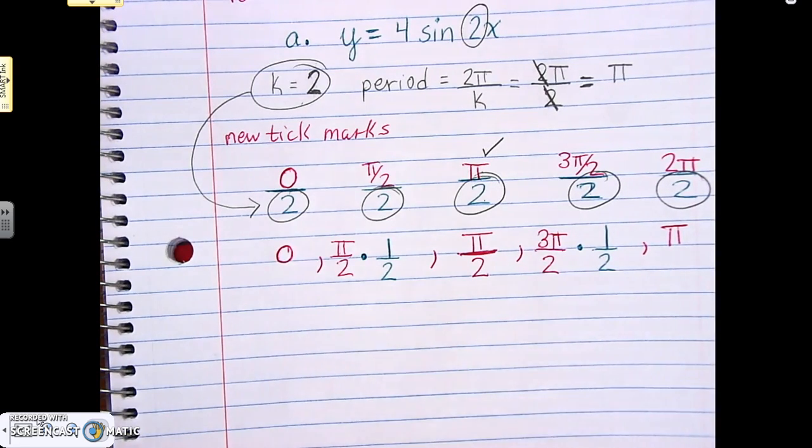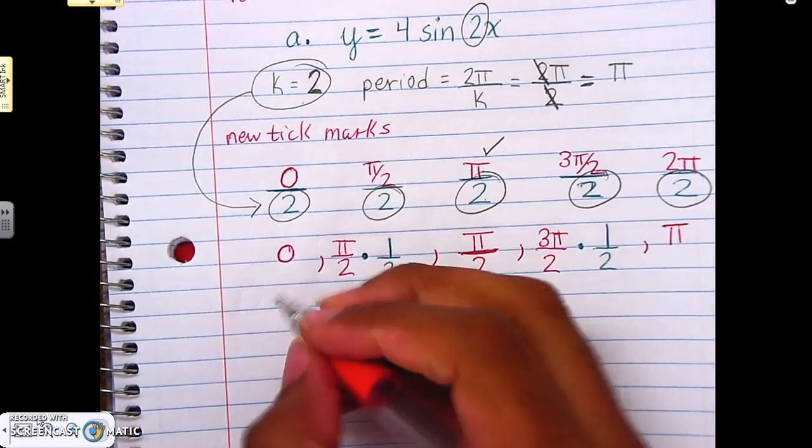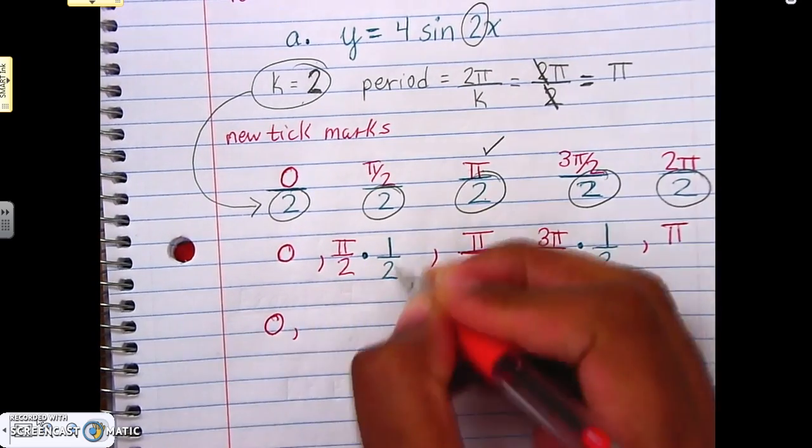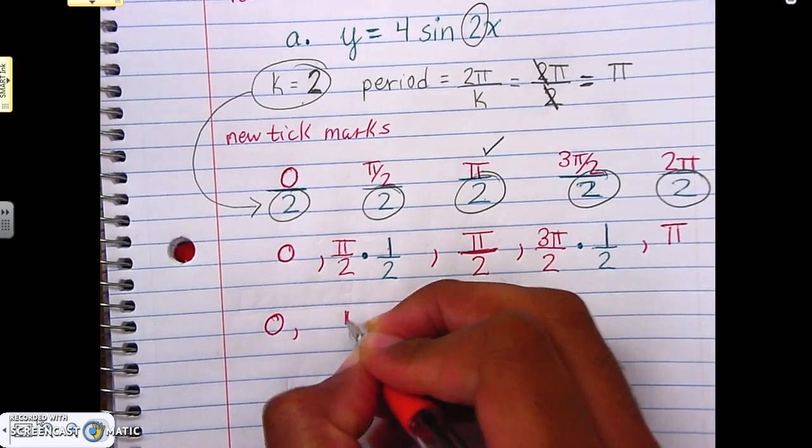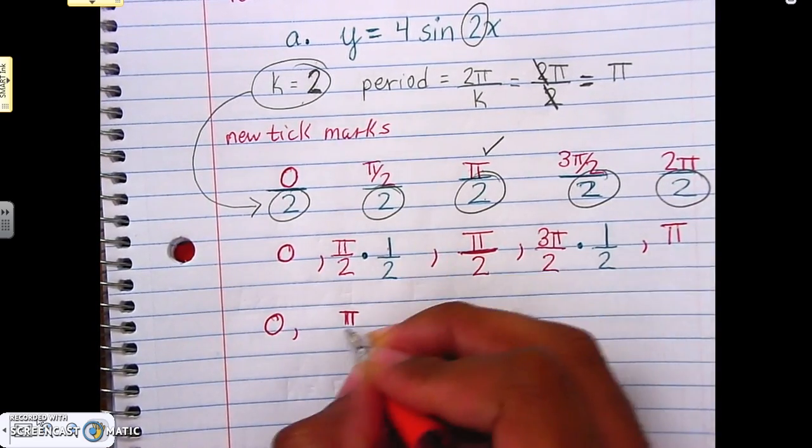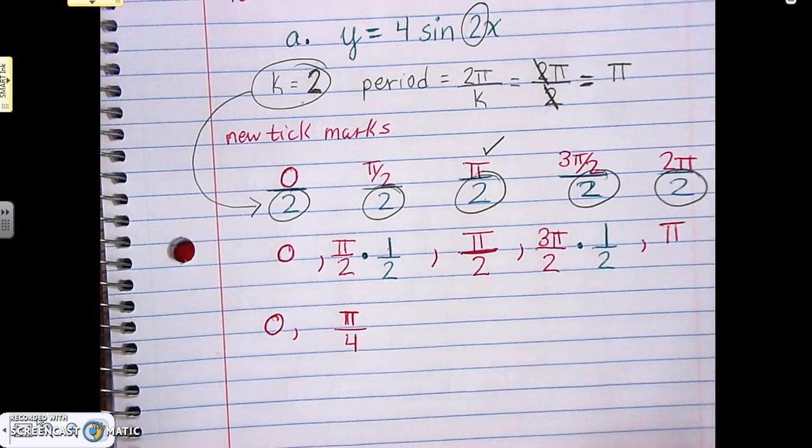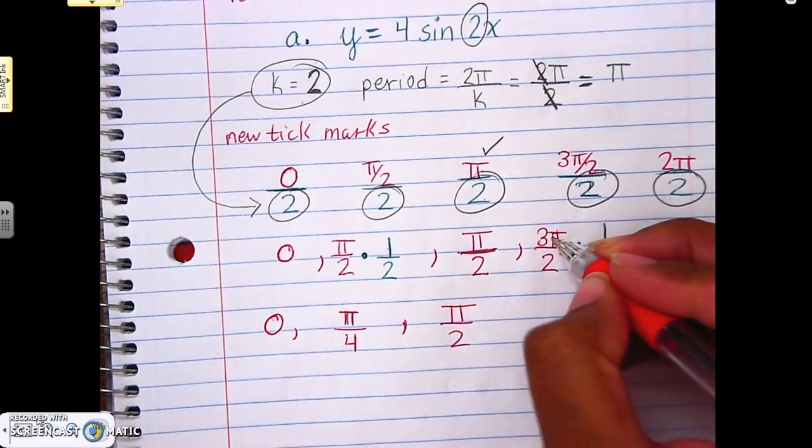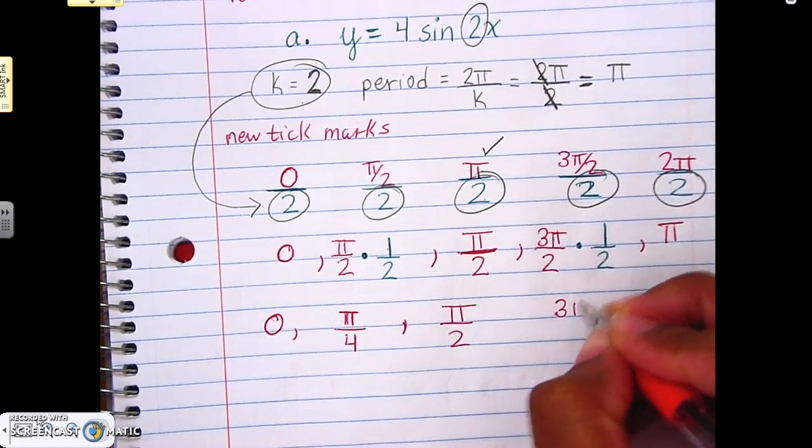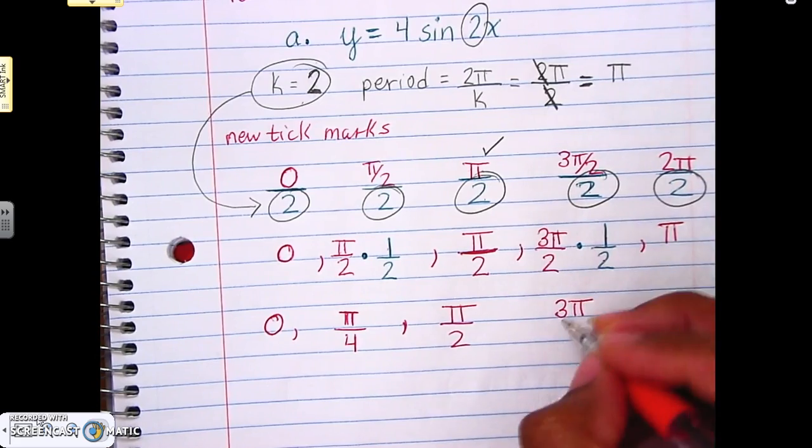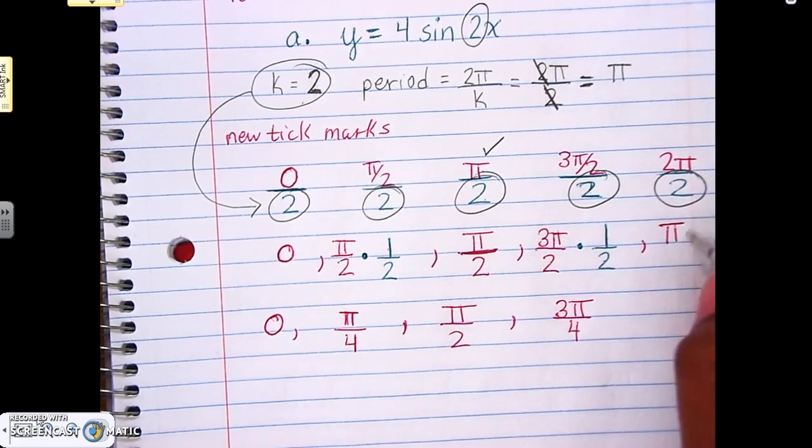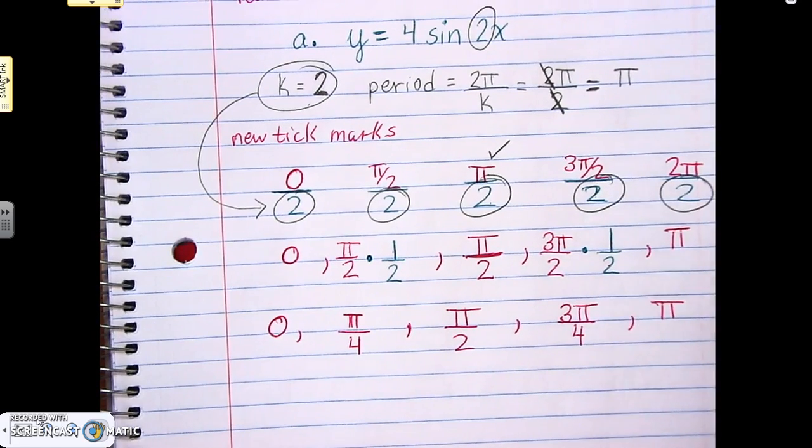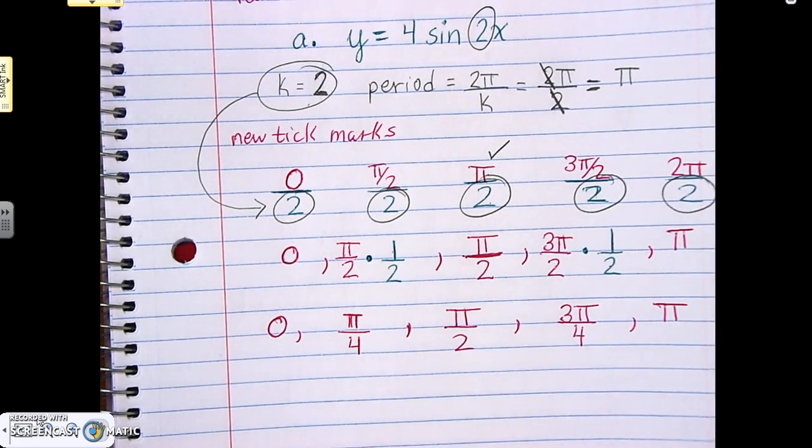Alright, so then our final answers for this, we have 0 here, π times 1 is π, 2 times 2 is 4, we keep π over 2, 3π times 1 is 3π over 4. So the last thing is now go ahead and graph it out, because we found our new tick marks, we found the period, and now we graph them out.